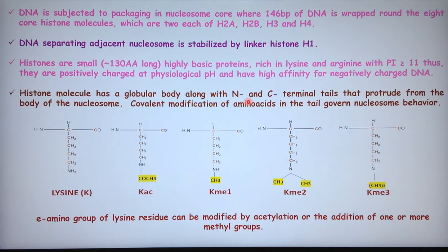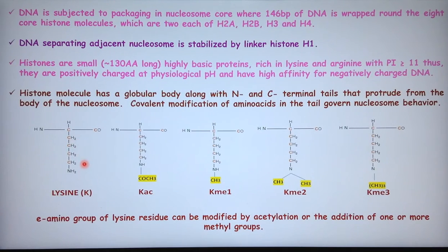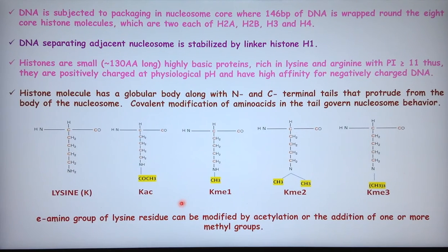The histone molecule has a globular body along with N- and C-terminal tails that protrude from the nucleosome, and covalent modification of amino acids in the tail governs nucleosome behavior. The one-letter symbol for lysine is K. When an acetyl group is added it is called KAC; KME1 if a single methyl group is added; KME2 if there are two methyl groups; and KME3 when there are three methyl groups.